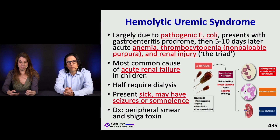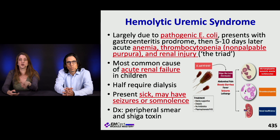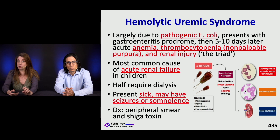Hemolytic uremic syndrome is largely due to pathogenic E. coli. It can present with a gastroenteritis syndrome, and then five to ten days later you can get acute anemia, thrombocytopenia, and non-palpable purpura — that's the triad of HUS — along with renal injury. This is the most common cause of acute renal failure in children, half of which require dialysis. Kids can present really sick — some can have seizures, present somnolent. Diagnosis involves a peripheral smear and a shiga toxin test.